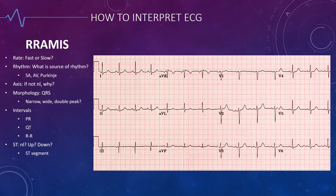They suggest considering the rate, the rhythm, the axis, the morphology, the intervals, and then going looking for ischemic stuff like ST segments. That's not a bad way to do it — that's fine.